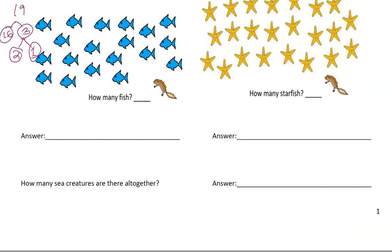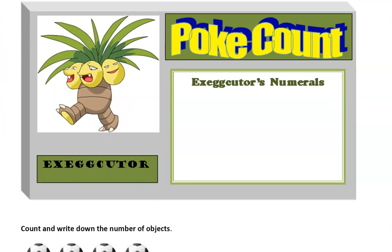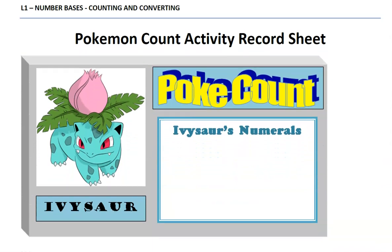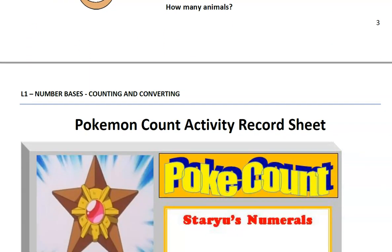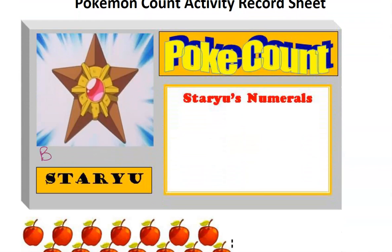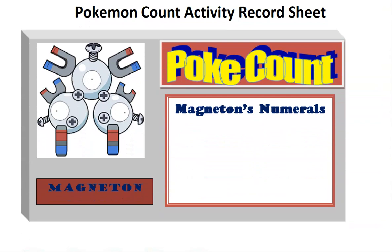As you continue on this worksheet, an Exeggutor is going to count on its heads, so it would count in base 3. The Ivysaur is going to count on its leaves, so this is going to count in base 4. Staru is going to count in base 5. Magneton is going to count in base 6 because it has 1, 2, 3, 4, 5, 6 magnets.